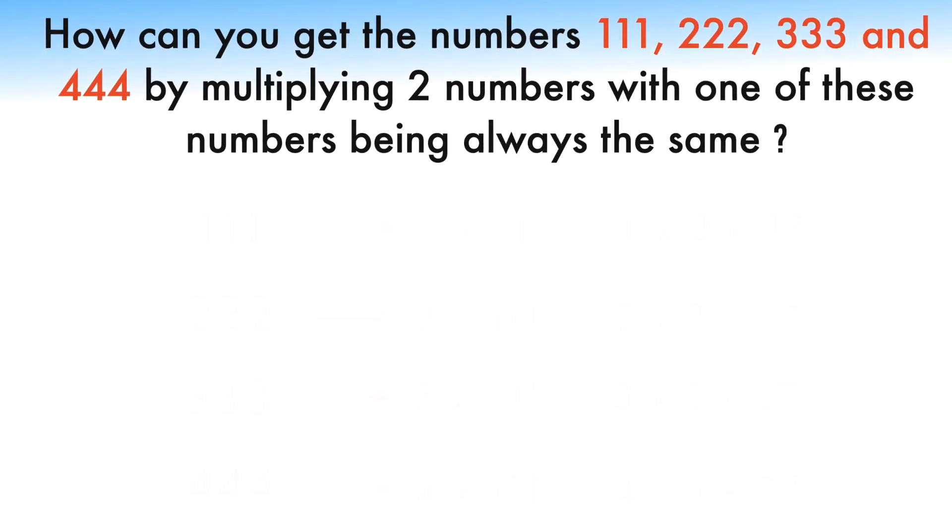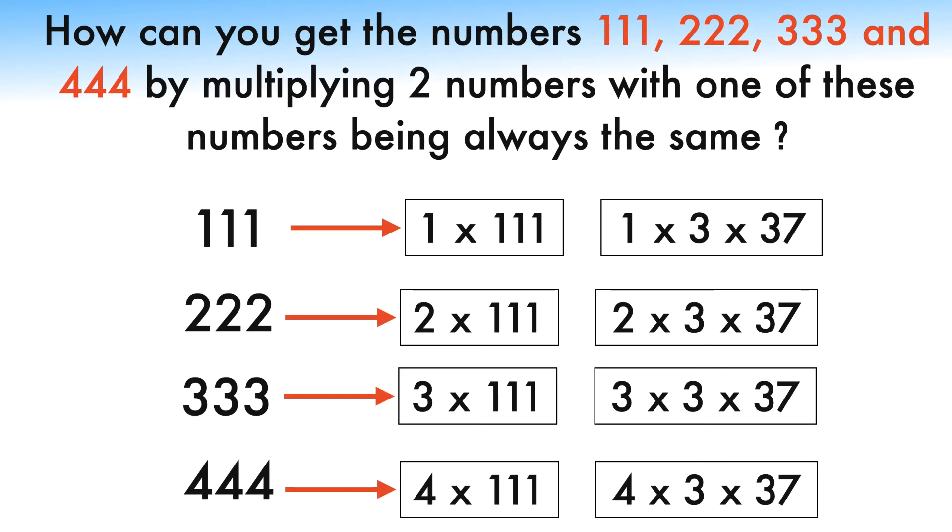So, the solution to this problem is: 111 can be represented as 1 times 111 or 3 times 37. 222 can be represented as 2 times 111 or 2 times 3 times 37. 333 can be represented as 3 times 111 or 3 times 3 times 37. Finally, 444 can be represented as 4 times 111 or 4 times 3 times 37.